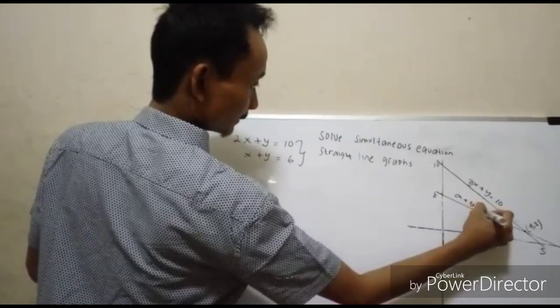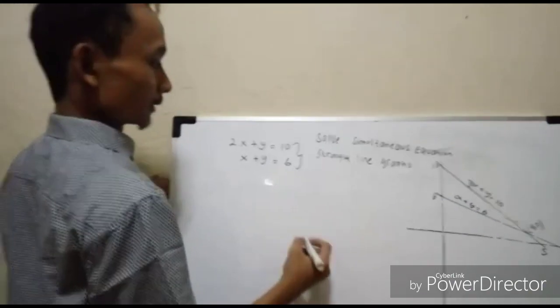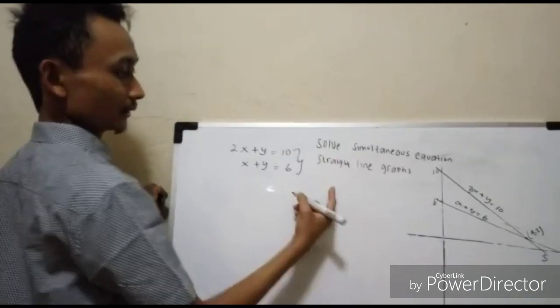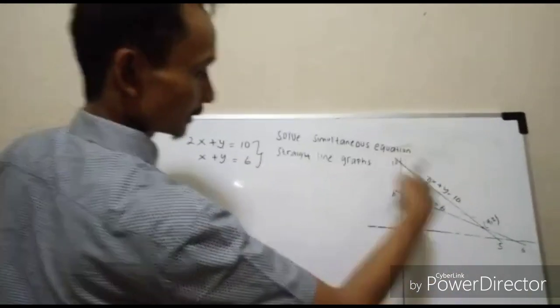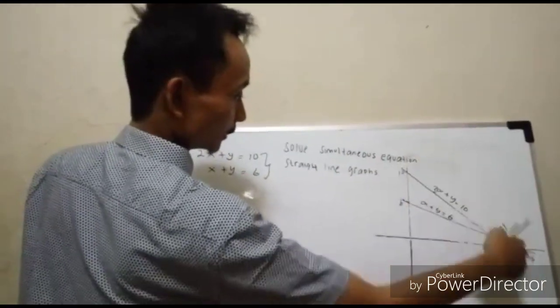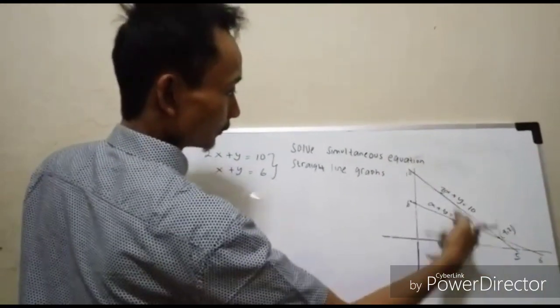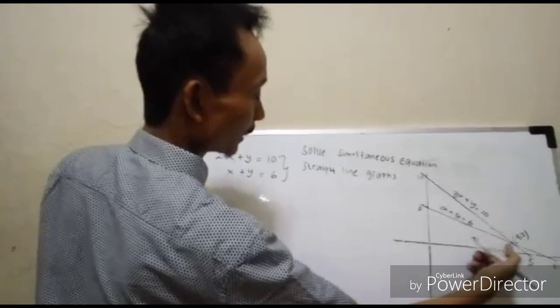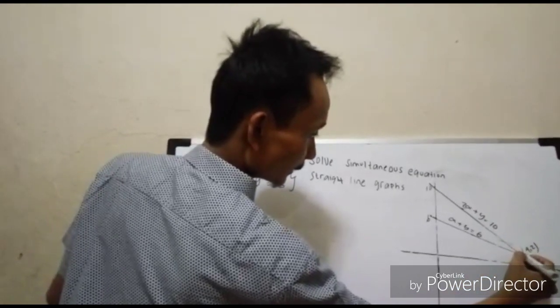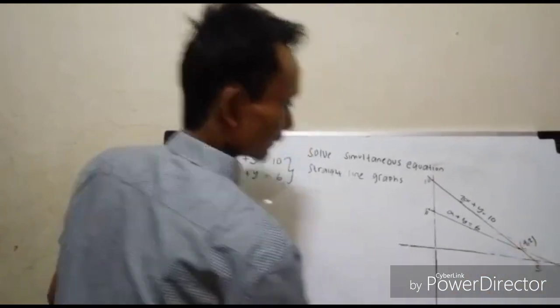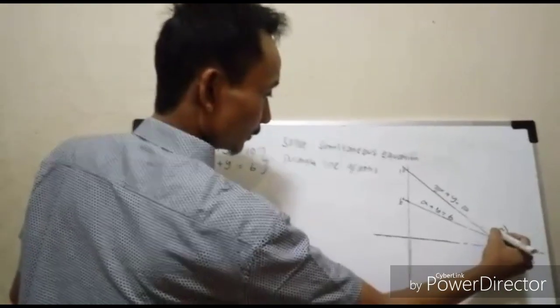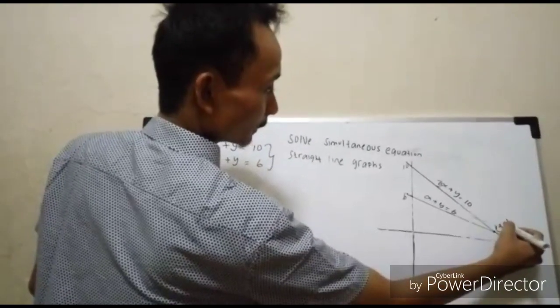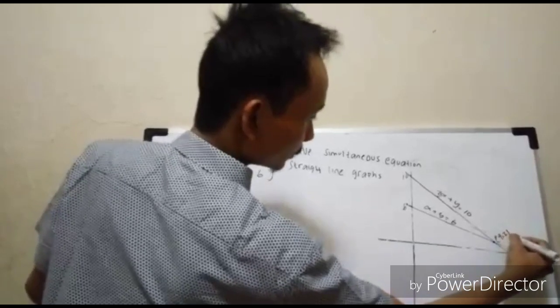The solution of the simultaneous equations is the intersection of these lines. The solution is x equals 4 and y equals 2, or the point (4,2).